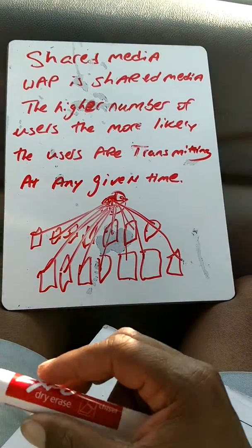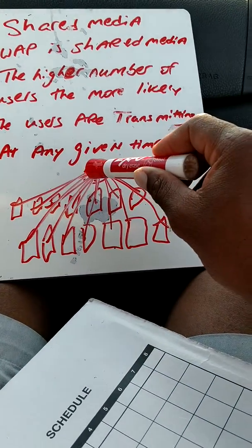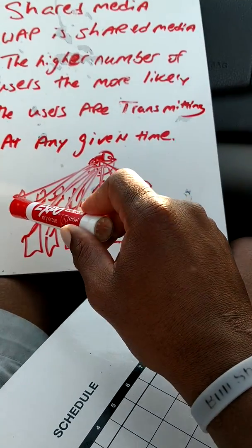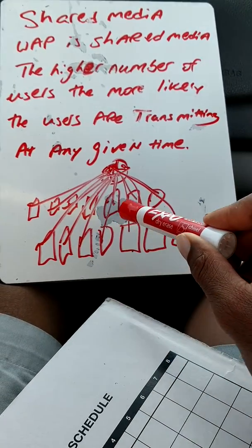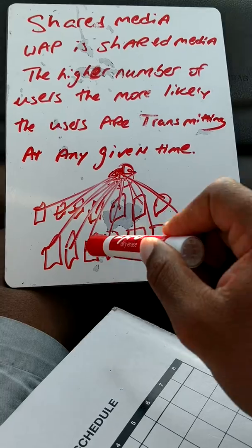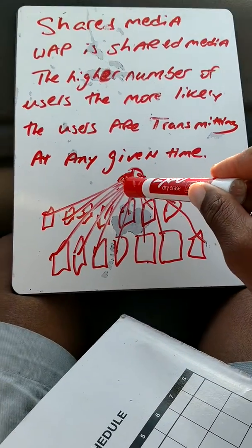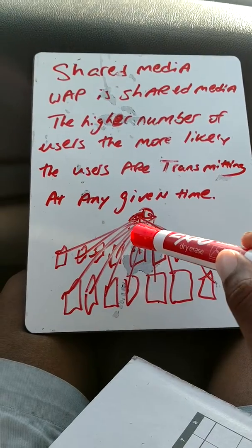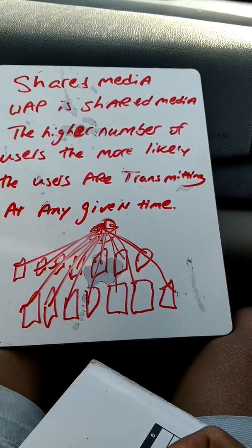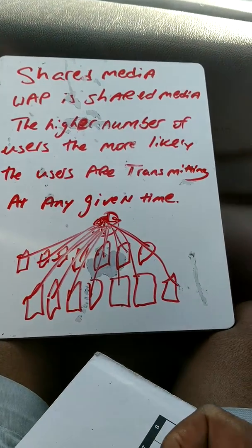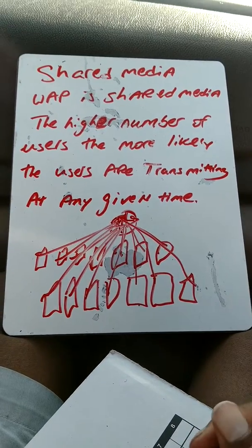In this tutorial, this right here is an example of a router, and these rectangle boxes right here are examples of cell phones. The cell phones are all connected wirelessly to the wireless access point. A wireless access point, or a router, or like a Wi-Fi router, like a hotspot, is a form of technology that is referred to as shared media, because it's sharing the same media.